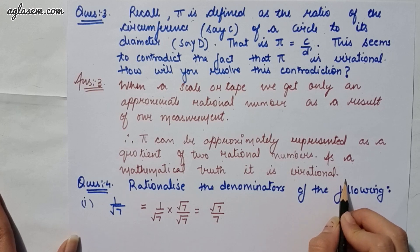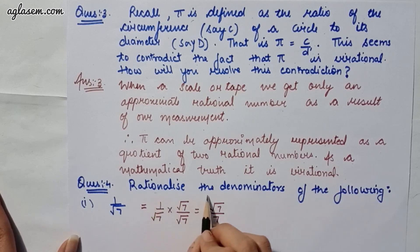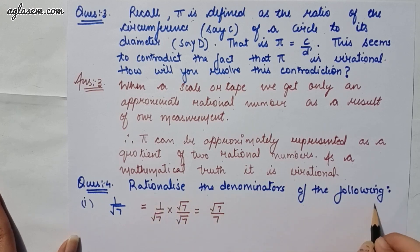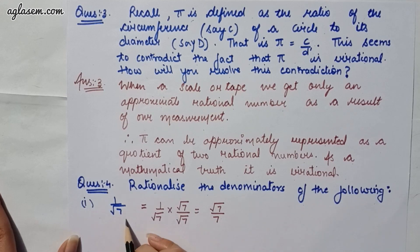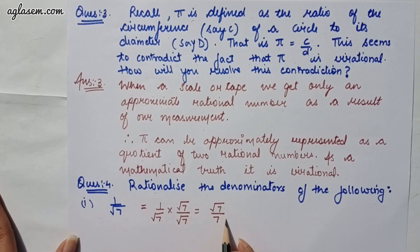Moving to our fourth question, which says: rationalize the denominators of the following. Part 1 says 1 upon root 7. That gives you 1 upon root 7 multiplied by root 7 upon root 7, which gives you root 7 upon 7.